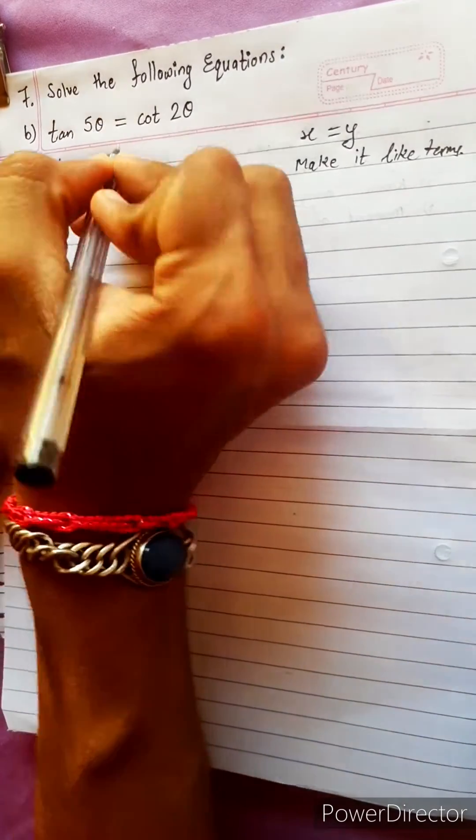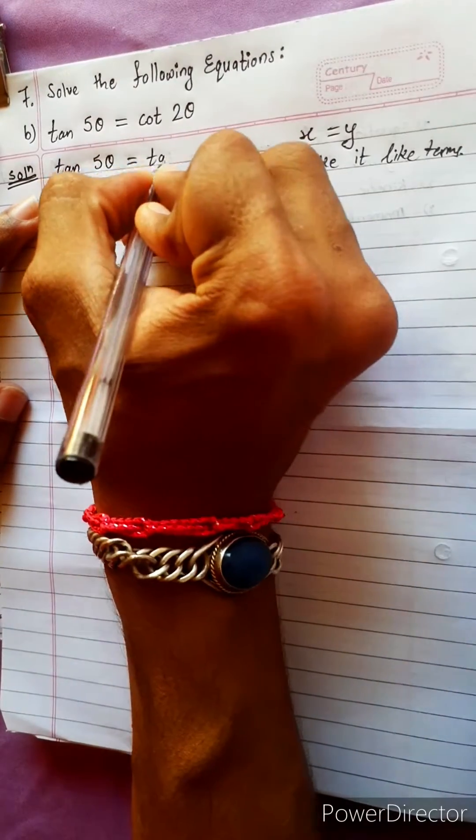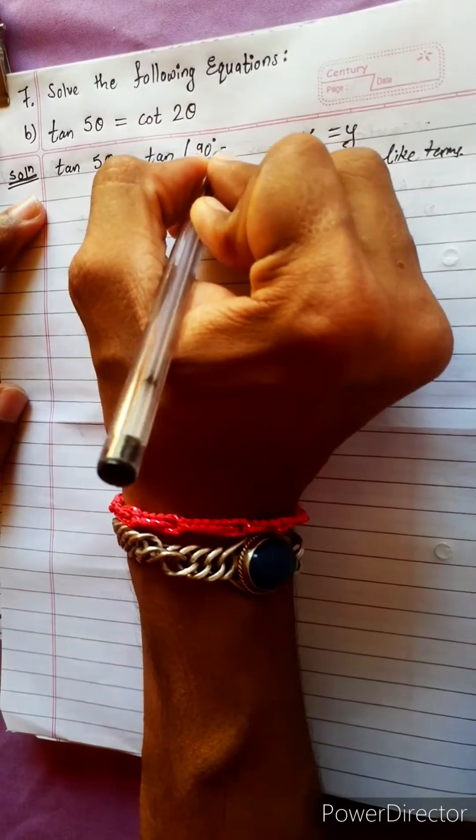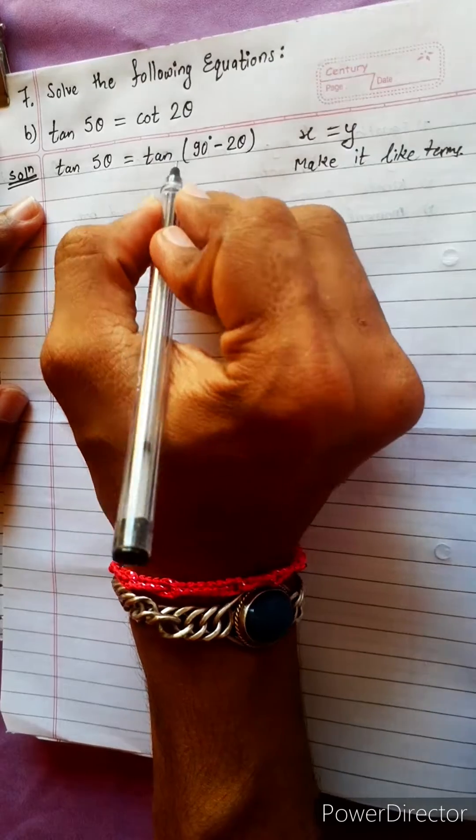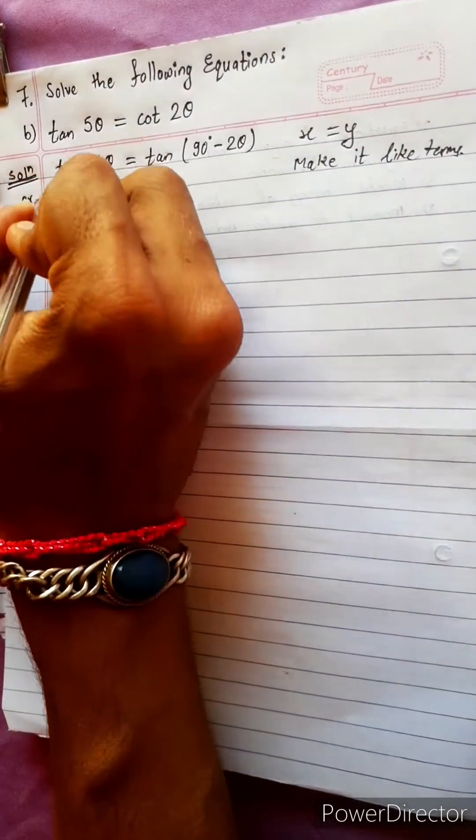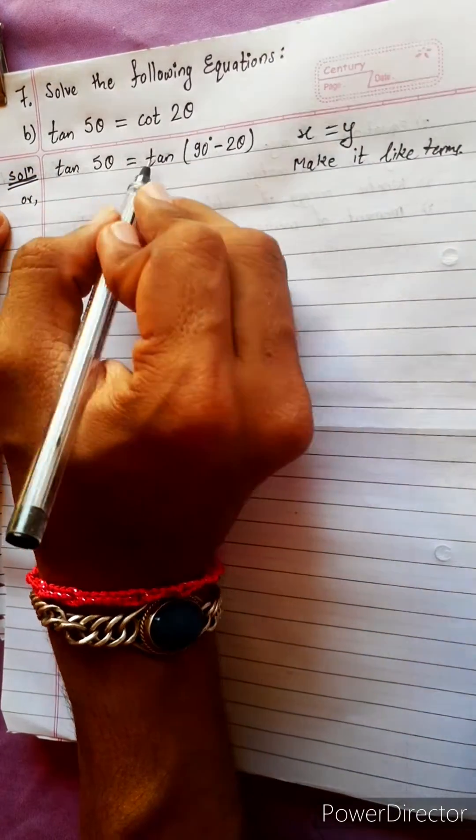Tan 5θ equals to cot. To change to tan, use 90 degree minus. Then cot will become tan.